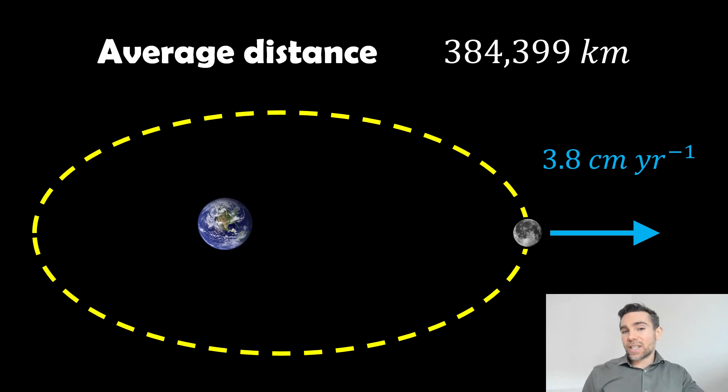I say average distance because the moon's actually on an elliptical orbit, it's not circular. So as it goes around the Earth, it gets closer and further away, so we have to take the average. Also, because we know this distance and we keep measuring it, we've been measuring for about 50 years or longer, we have found that the moon is actually moving away.